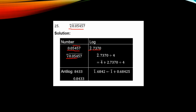The fourth root means we divide the logarithm by 4. Bar 2 cannot be divided evenly by 4, so we rewrite bar 2 as bar 4 plus 2, since bar 4 divided by 4 gives bar 1, and bar 4 plus 2 still equals bar 2. This allows us to divide without difficulty.